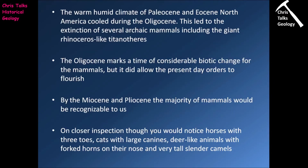The warm humid North American climate of the Paleocene and Eocene cooled during the Oligocene, bringing about the extinction of several groups of placental mammals including the giant rhinoceros-like Titanotheres. The Oligocene marks a time of considerable biotic change for the mammals, but it did allow the present-day orders to establish themselves and flourish. By the Miocene and Pliocene, the majority of mammals would be recognizable to us, though on closer inspection we would notice differences — horses with free toes, cats with very oversized canines, deer-like animals with forked horns on their noses, and tall slender camels.